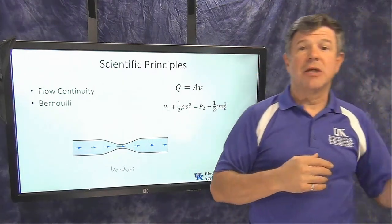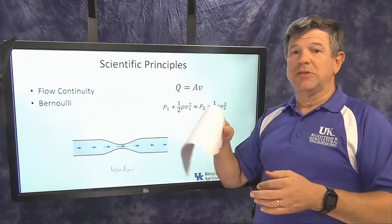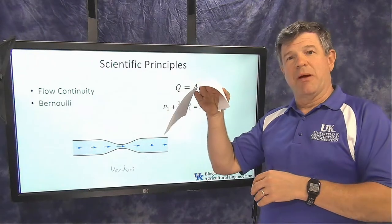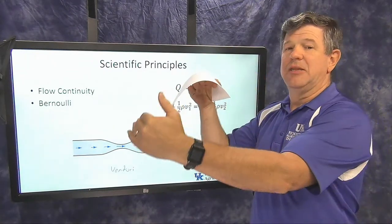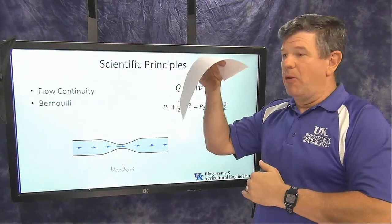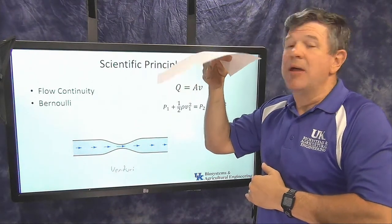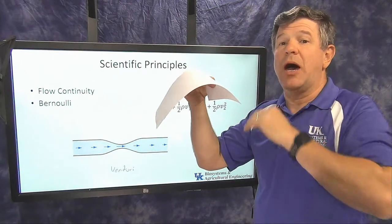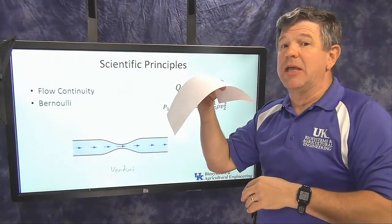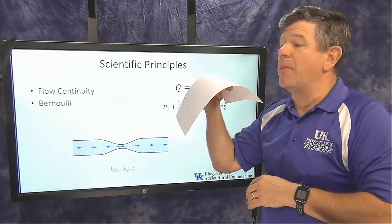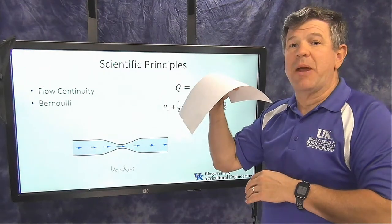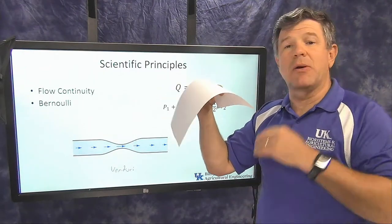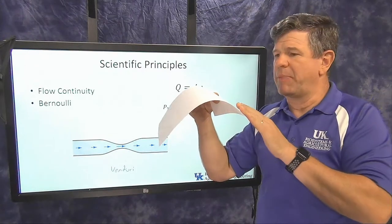It's the same principle that makes an airplane work. You've probably seen an airplane wing. If I hold this paper up like this, you can see the shape of the airplane wing. We know what happens when you blow on the bottom of that piece of paper—the paper is going to go out. But what's interesting is that when we blow on the top of the paper, we're also going to get that wing to come up.